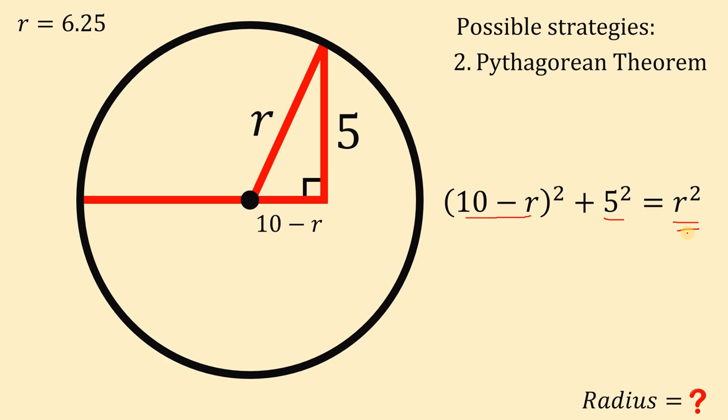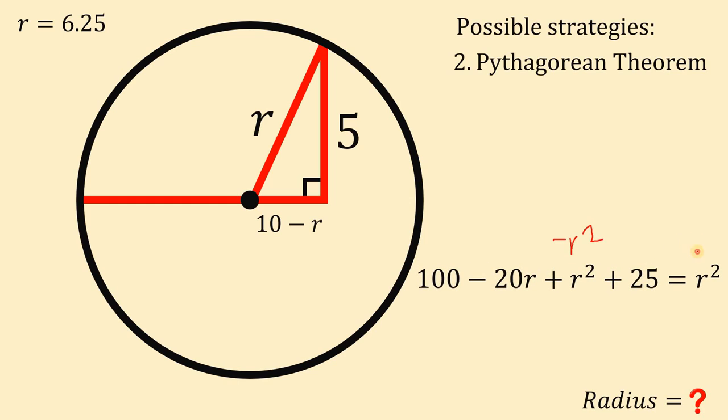This equation is in terms of R, so we can solve for R. Let's simplify (10 minus R) raised to the power of 2. We get 100 minus 20R plus R squared. 5 squared is 25. Let's subtract R squared on both sides and we cancel out R squared on the right and the left hand side.